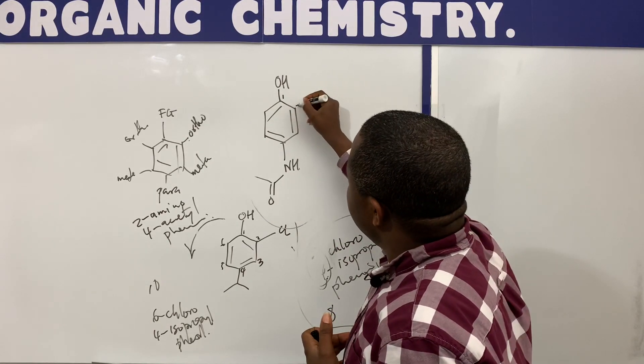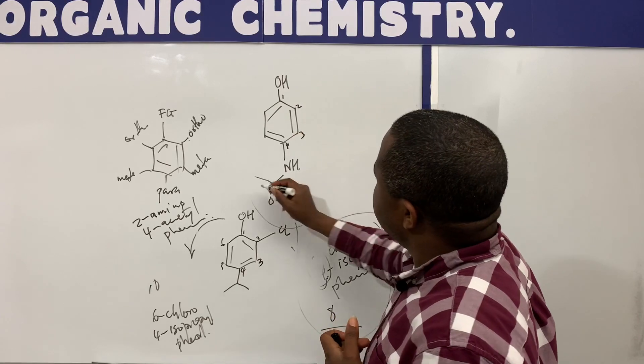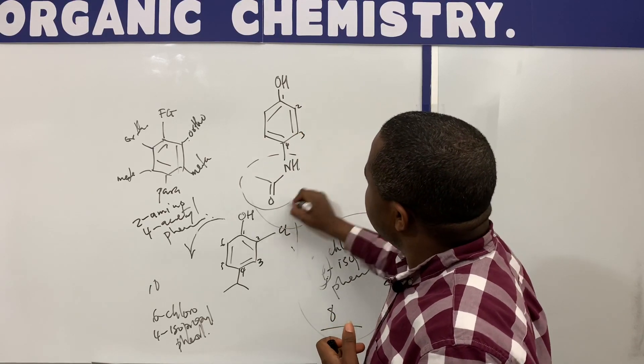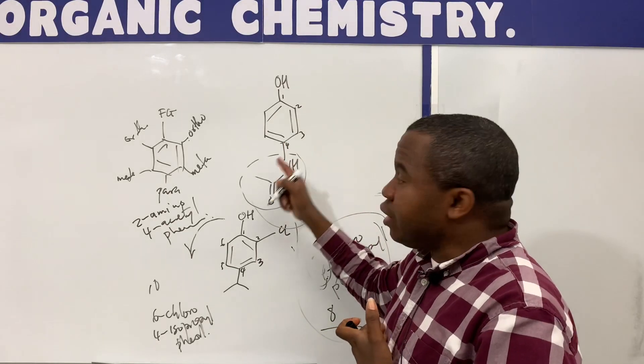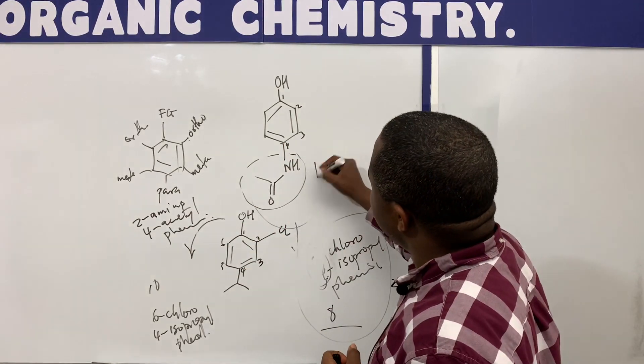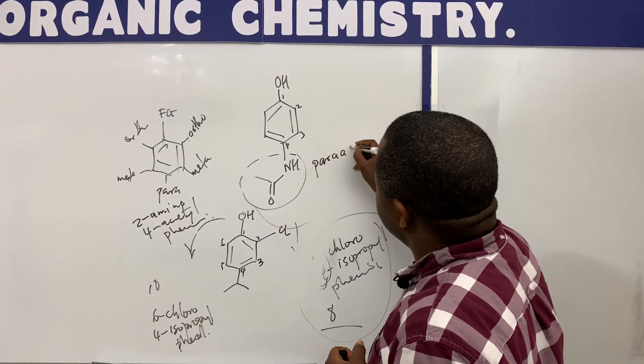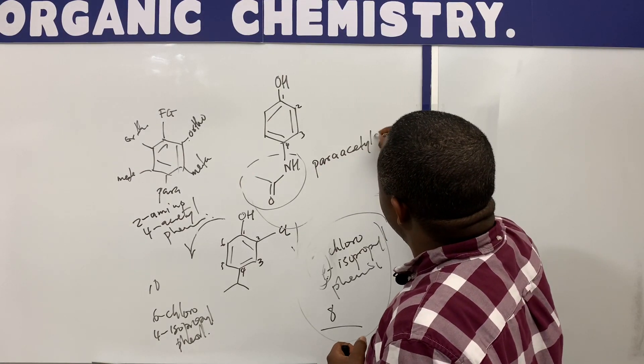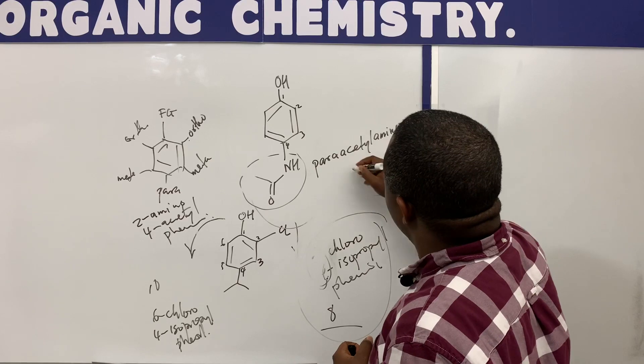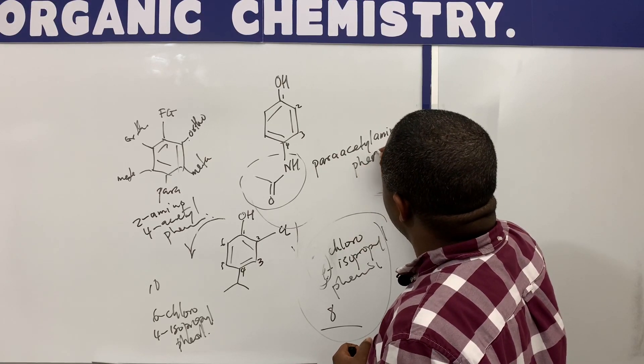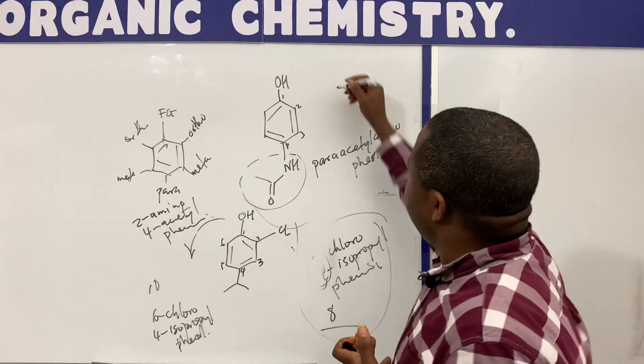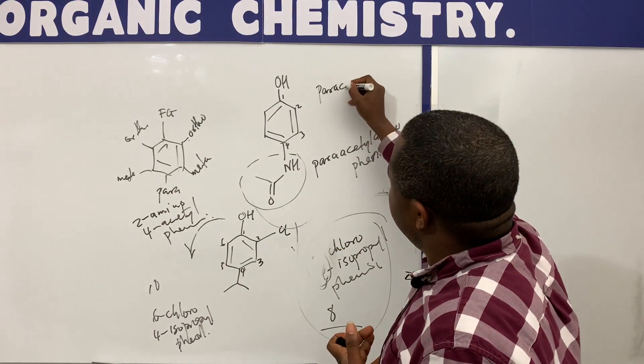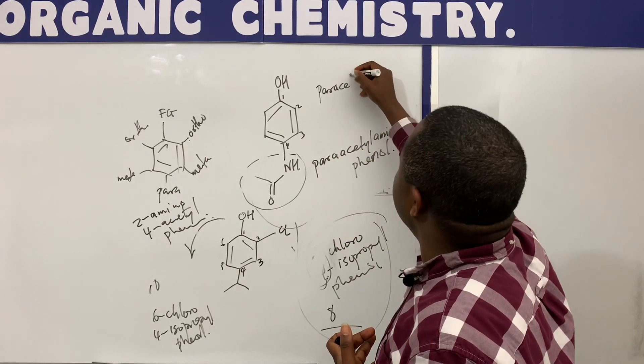So this is one, two, three, four. So this acetyl-amino group is on the fourth carbon, and we say if we have the fourth carbon in benzene derivative, we say that is para position. So this compound is actually para-acetyl-amino-phenol. Paracetamol. And interestingly, this is what we call the paracetamol.